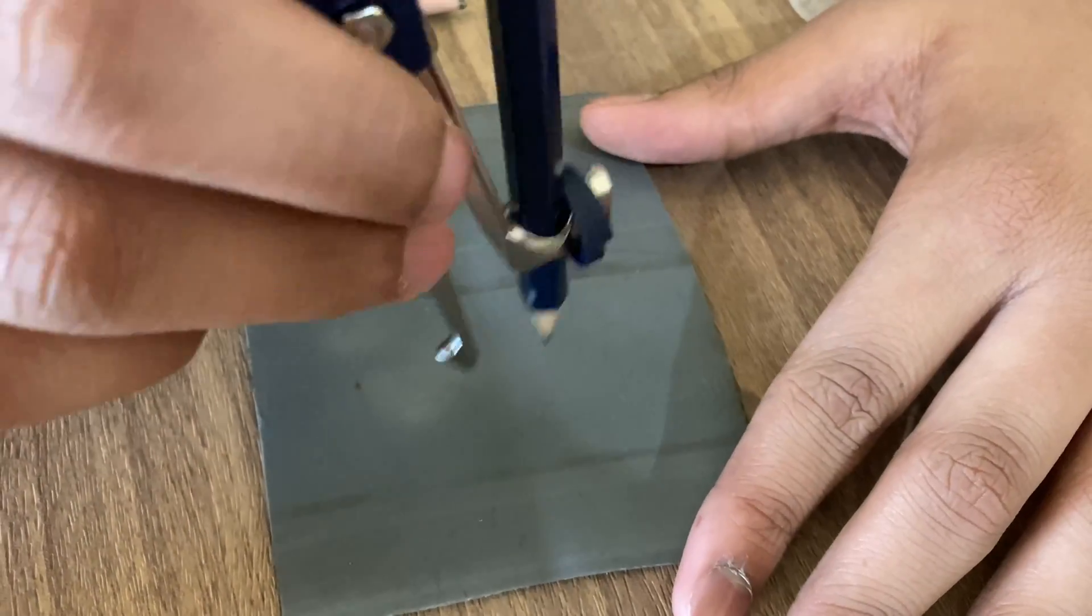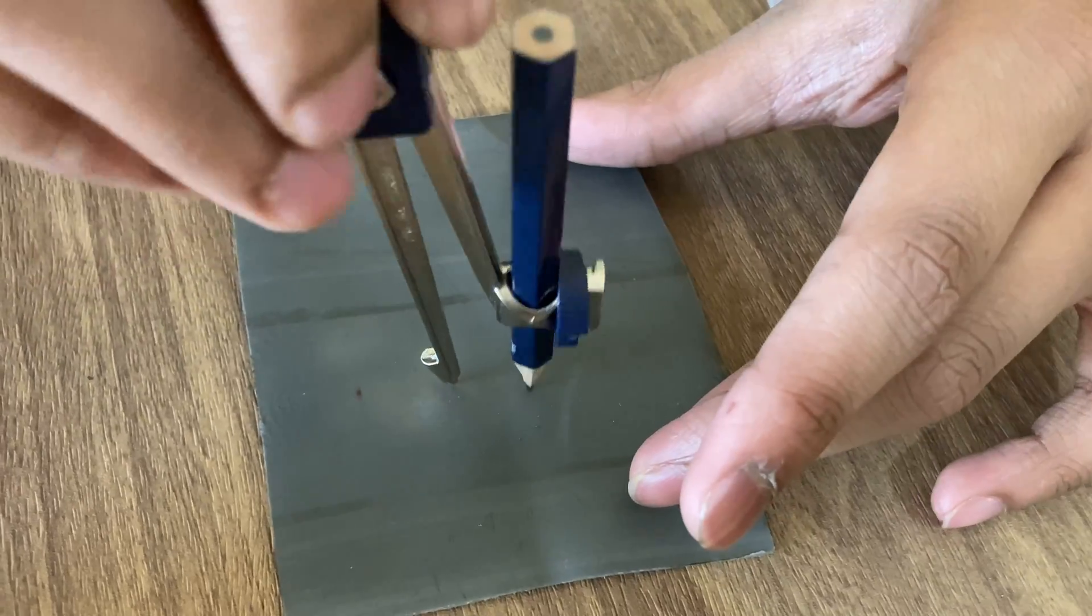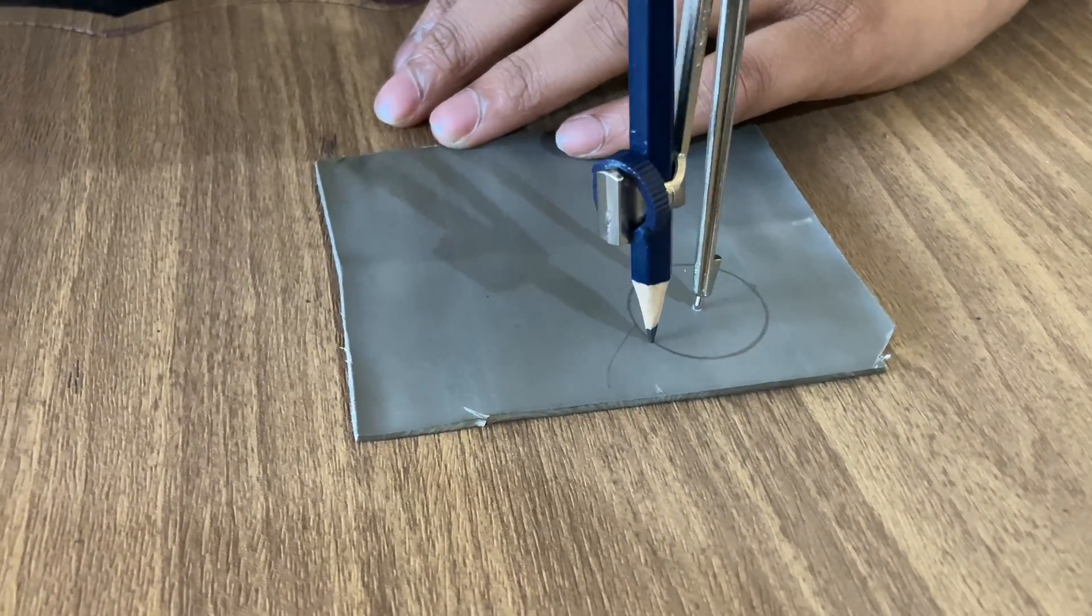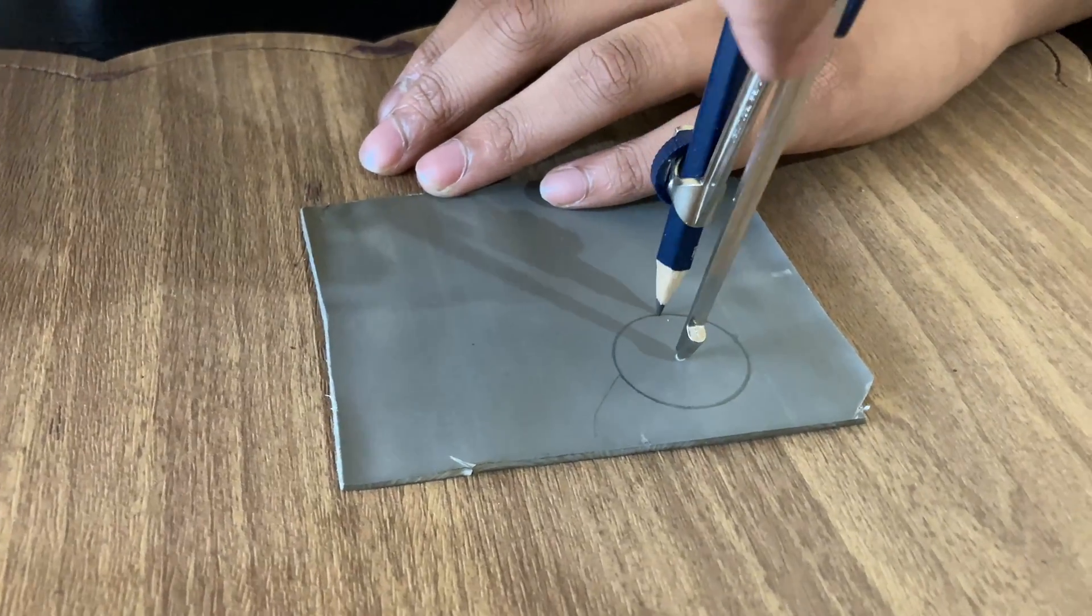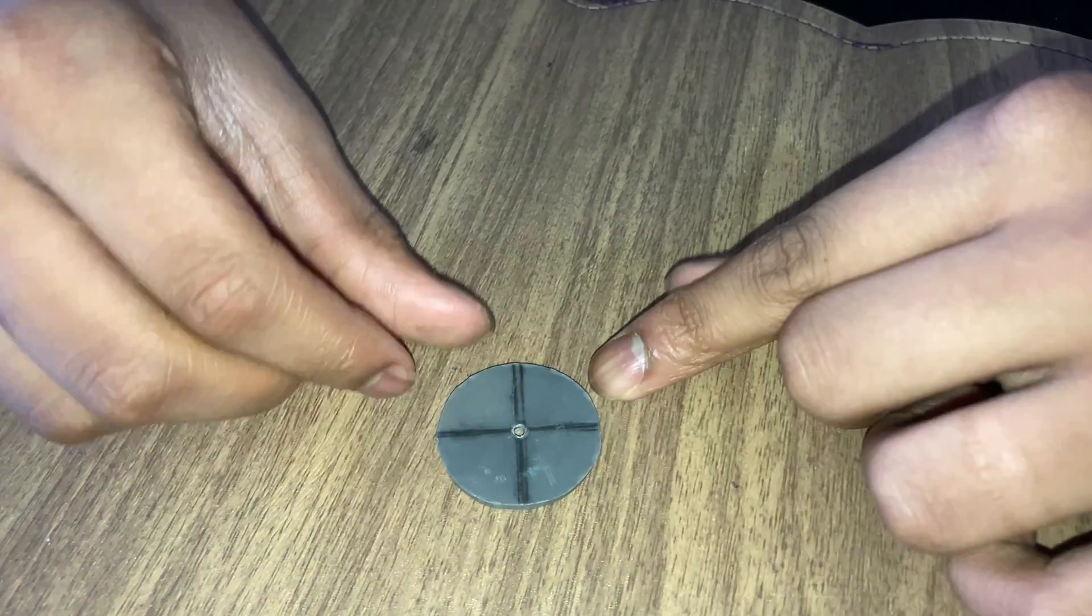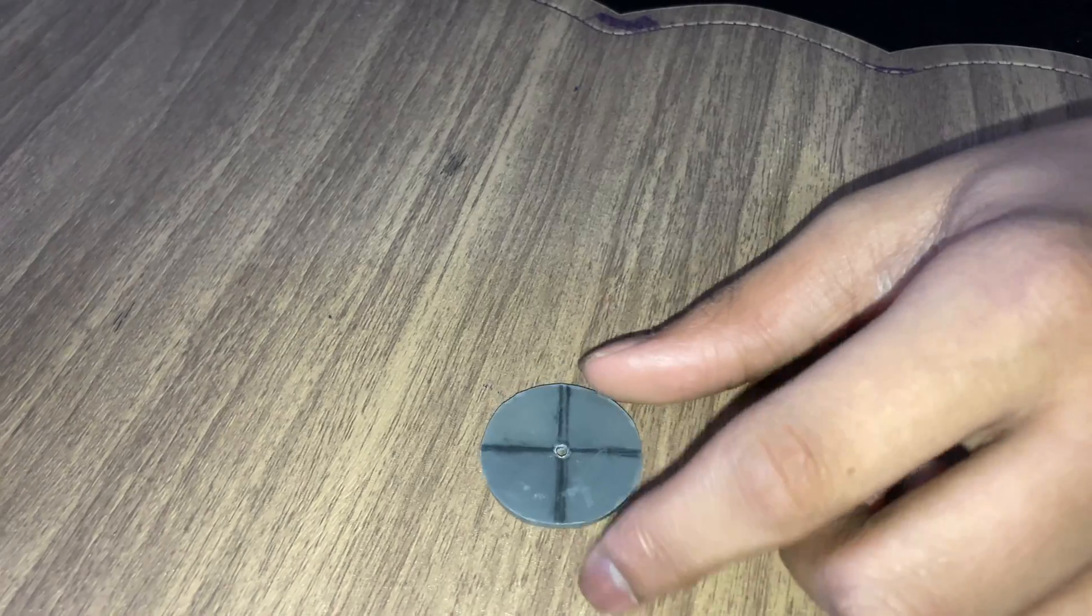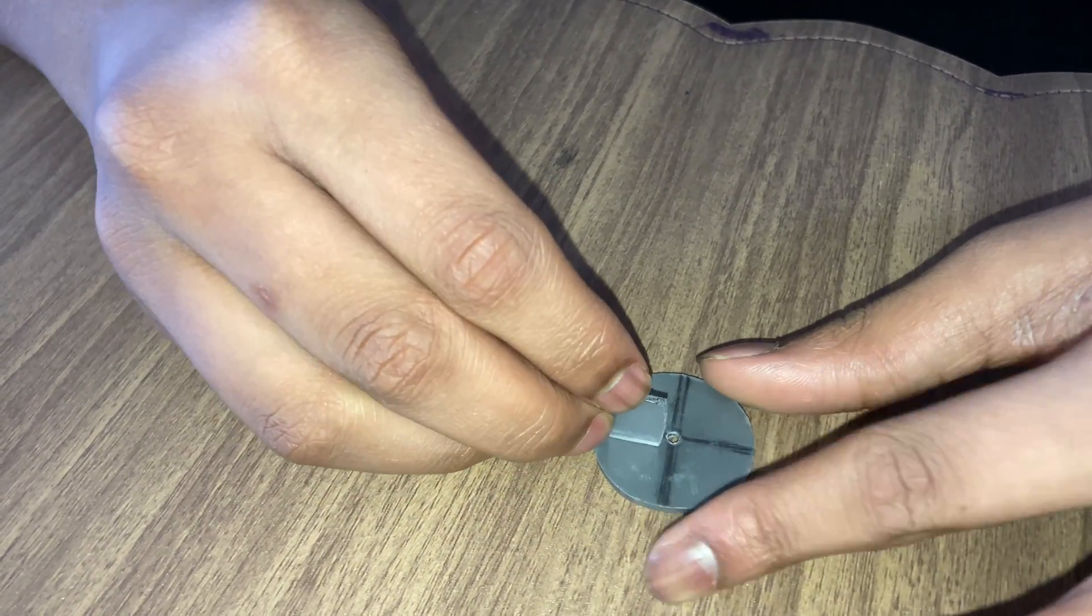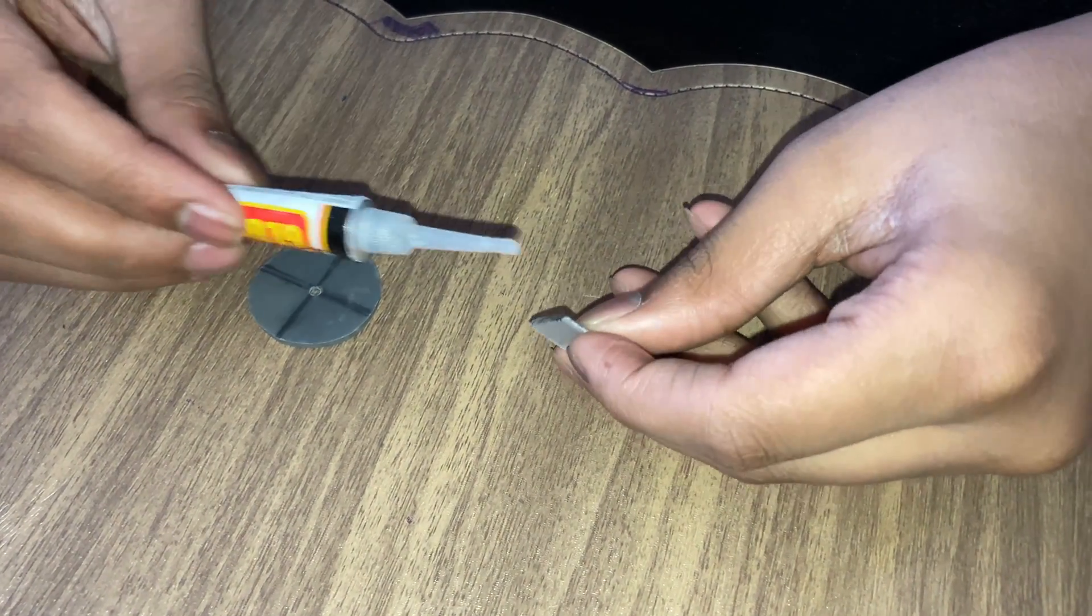Now I'm using this PVC sheet to make a fan base for our pump. Okay, so I have cut it round, I've also made the hole and some markings. Now I'm going to stick these square pieces of plastic like fan leaves. I'm using super glue to stick it.